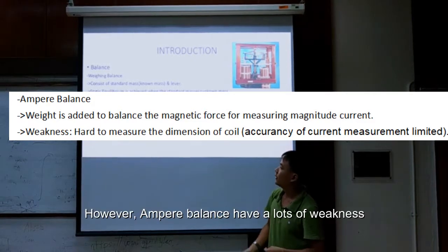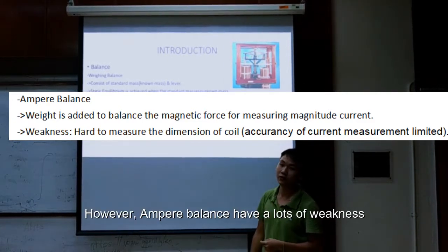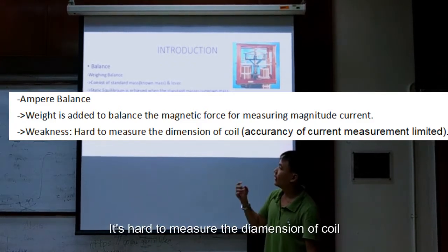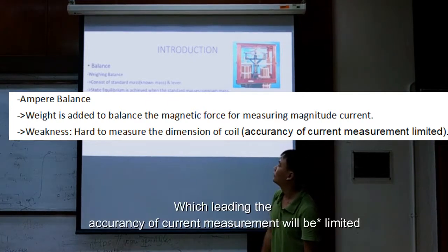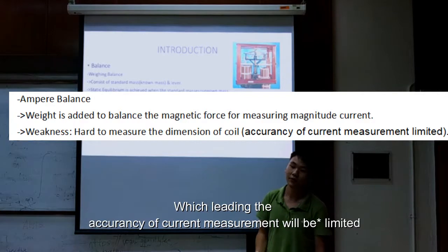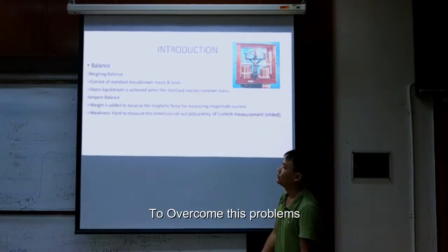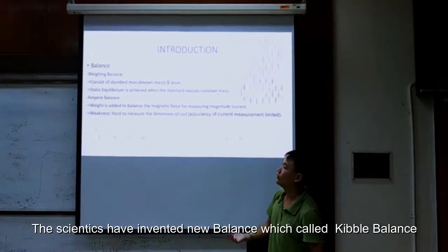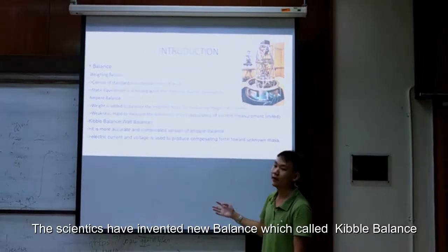However, the ampere balance has a lot of weakness. It is hard to measure the dimension of the coil, which means the accuracy of current measurement will be limited. To overcome this problem, scientists have invented a new balance called Kibble balance.